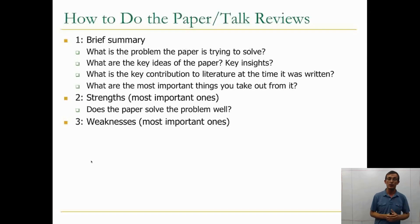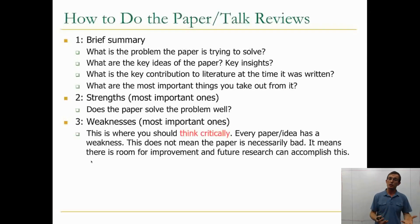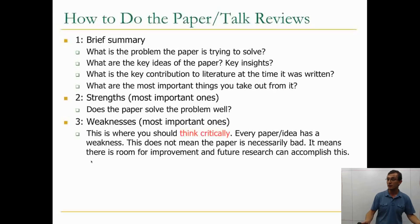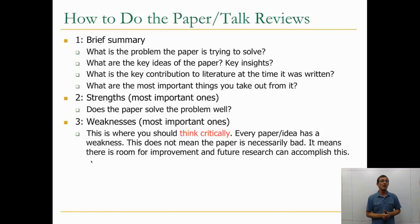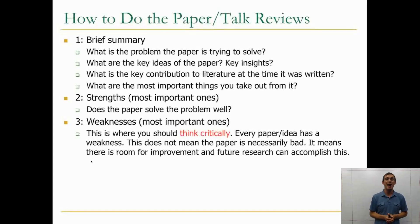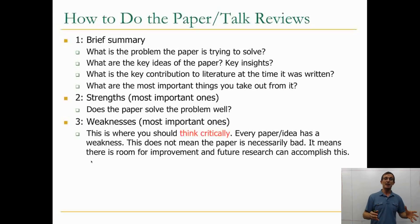The third part of the review is the weaknesses of the paper. Focus on the most important weaknesses first. This is where you should think very critically. Strengths are easier to find because authors will tell you the strengths, but authors may not want to reveal weaknesses. Every paper and idea has a weakness — this doesn't mean the paper is bad, it means there is room for improvement and future research.